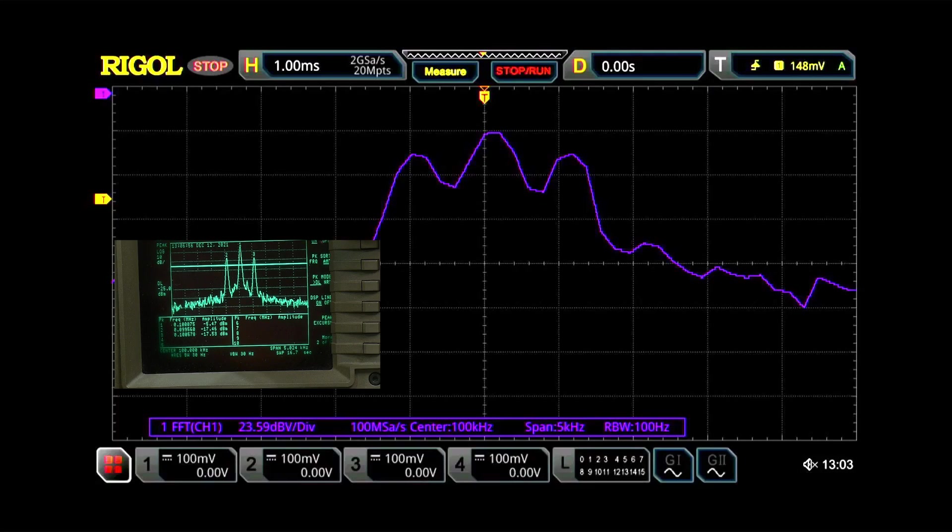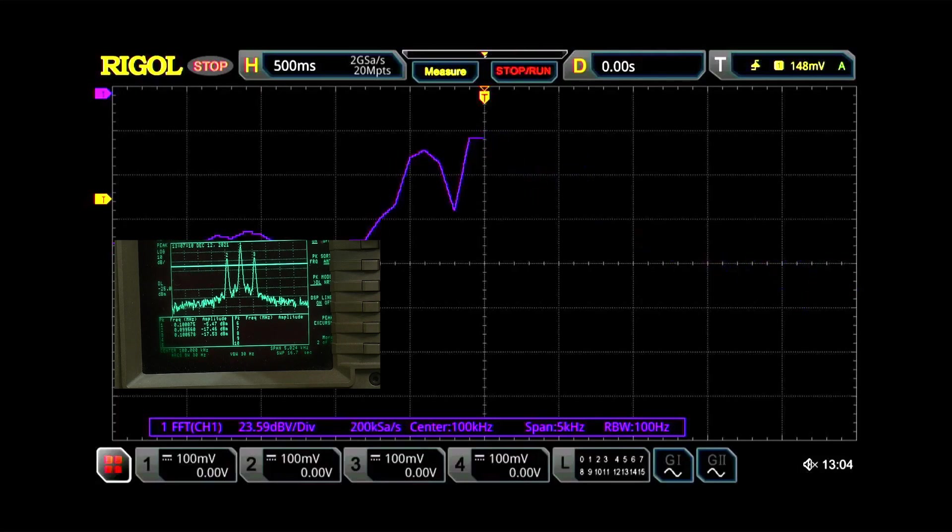Now the reason that it's such a crude looking image is because our resolution bandwidth isn't very good and our sampling isn't very good. The resolution bandwidth it actually is reporting down at the bottom there at 100 Hz but the sampling is not very good. So what you need to do is you need to take your horizontal control and right now it's set to 1 millisecond. And so we're going to slow it down here. We'll slow it to 500 milliseconds and let's see what happens.